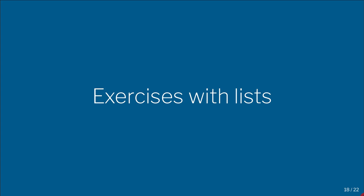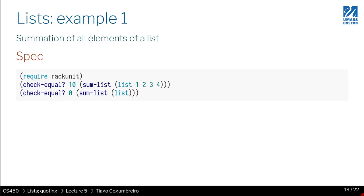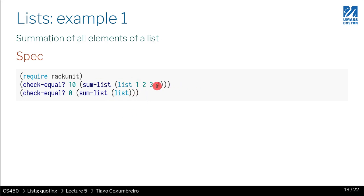In this video we're going to do a few exercises with lists. The first one: given a list, we want to compute the summation of all its elements. The list is expected to only contain numbers and we are supposed to return the summation of all of them. When the list is empty you should return zero.